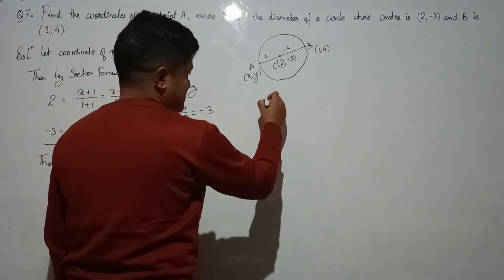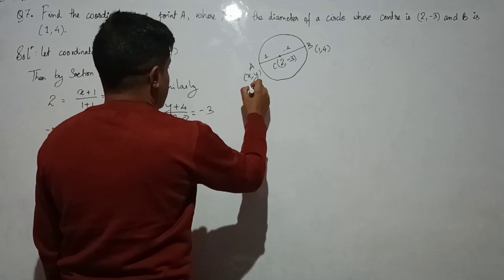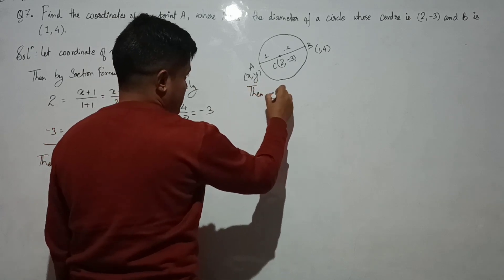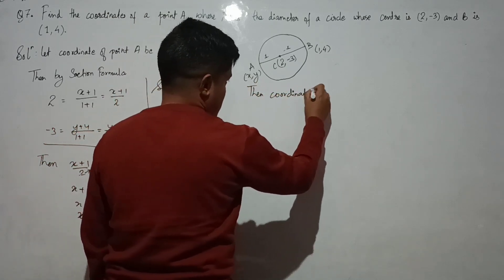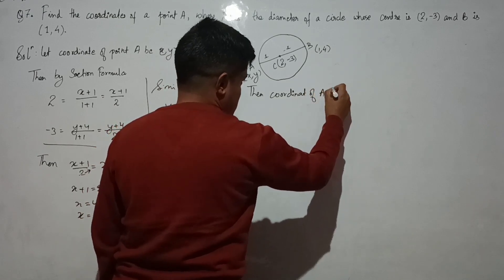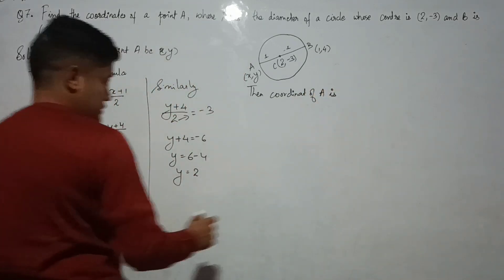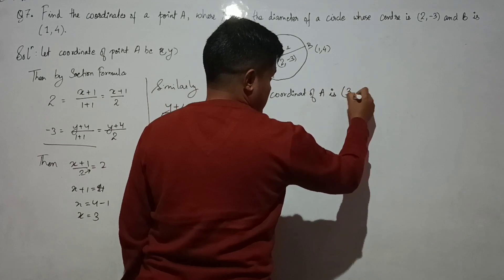So X coordinate I have, then coordinate of A is X coordinate 3, Y coordinate 2.